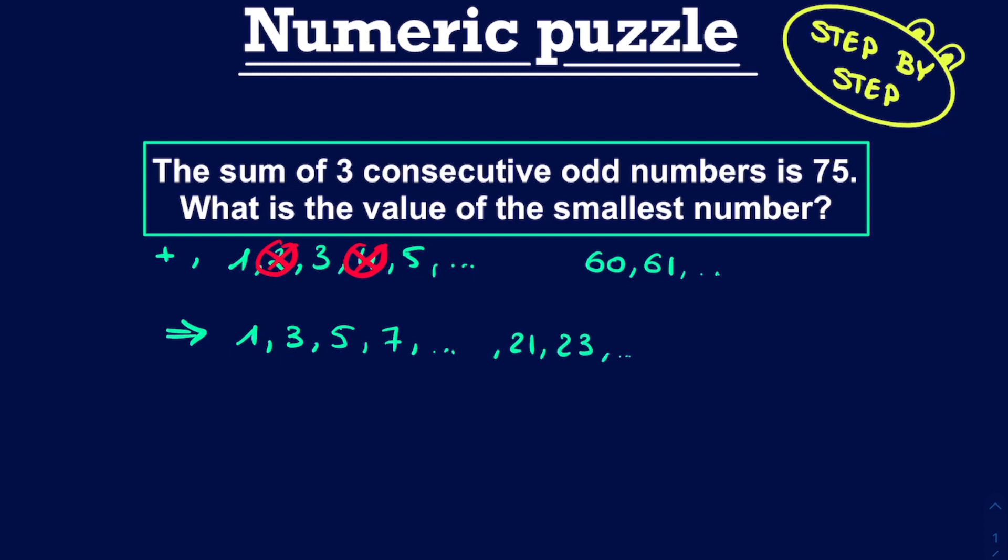Now we have to add three consecutive numbers such that the sum is 75. Adding three consecutive odd numbers, for instance, gives us one plus three plus five, which is equal to nine. And this is obviously not equal to 75. So the lowest number cannot be one.